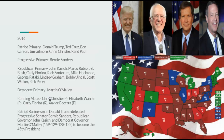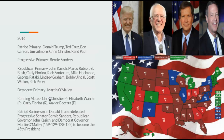Going on to 2016, Patriots nominate Donald Trump — appearing out of nowhere just like he did in 2016. Progressives nominate Bernie Sanders, Republicans John Kasich, and Democrats Martin O'Malley. Running mates: Patriot Chris Christie, Progressive Elizabeth Warren, Republican Carly Fiorina, Democrat Xavier Becerra. Patriot businessman Donald Trump defeats Progressive Senator Bernie Sanders, Republican Governor John Kasich, and Democrat Governor Martin O'Malley, 159 to 129 to 128 to 122, to become the 45th President.